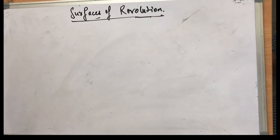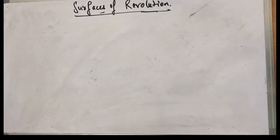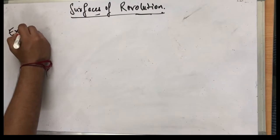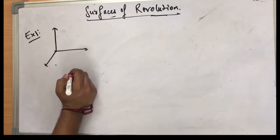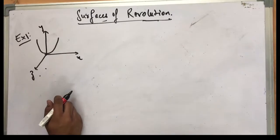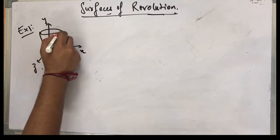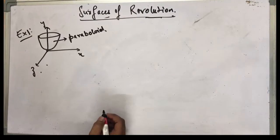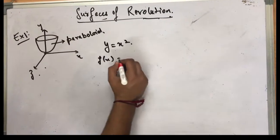These were the locus of points for each curve being rotated about the given axis. Let's take some examples for easy understanding. First example: a paraboloid formed by rotating a parabola about the y-axis. The parabola is in the xy-plane. Let's say the equation of this parabola in the xy-plane is y = x², so f(x) = x².